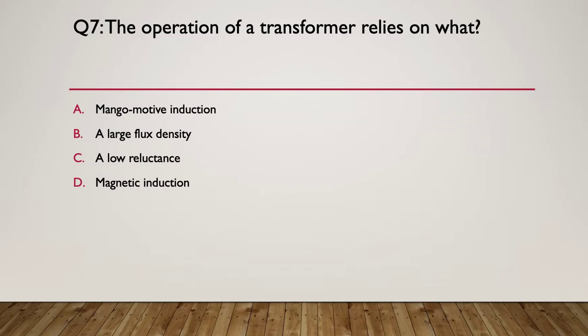Question seven. The operation of a transformer relies upon what? A: magnetomotive induction, B: large flux density, C: a low reluctance, or D: magnetic induction. Pause here.